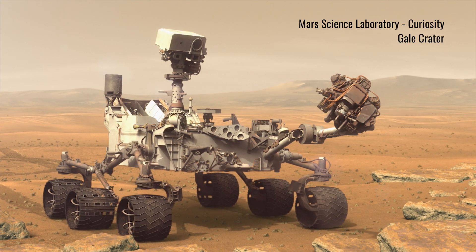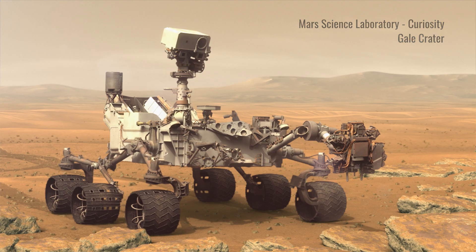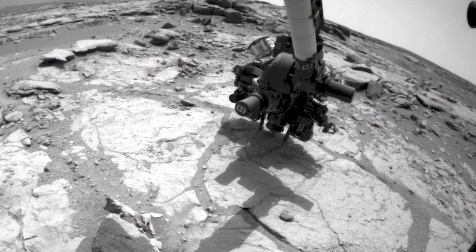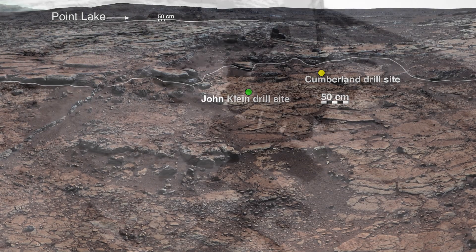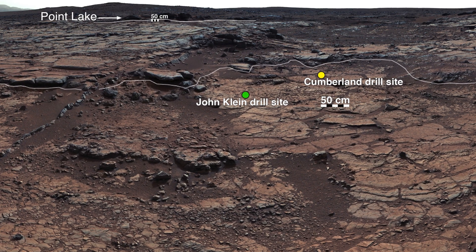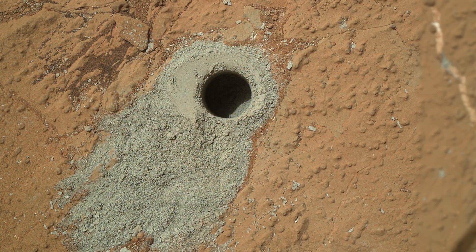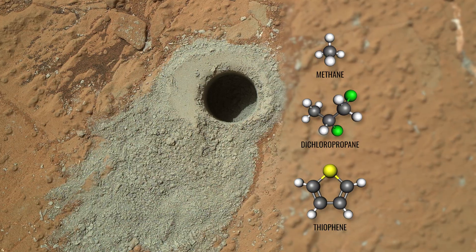A new finding by NASA's Curiosity rover has scientists speculating. In 2013, Curiosity collected samples from a mudstone called Cumberland, leading to the discovery of small organic molecules like methane, chlorinated hydrocarbons, and thiophene.